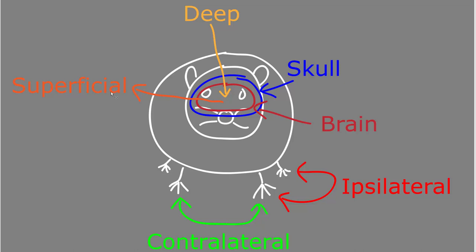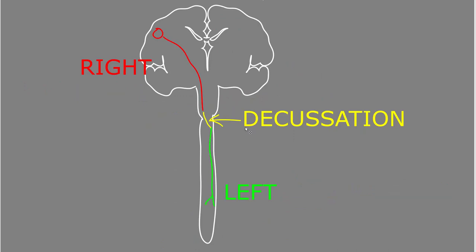Superficial means toward the surface, and deep means away from the surface. For example, if we're talking about the brain inside the skull, the skull is superficial from the brain, and the brain is deep to the skull. A special term is decussate or decussation — decussate is the verb and decussation is the noun. We use this term when talking about a bundle of axons in the central nervous system crossing the midline, either from right to left or vice versa.